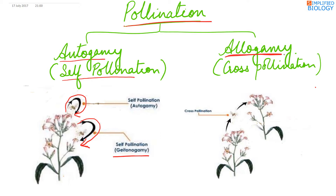Allogamy is cross-pollination, that is the transfer of pollen from the anther of a flower to the stigma of another flower of another plant. This is also referred to as xenogamy.